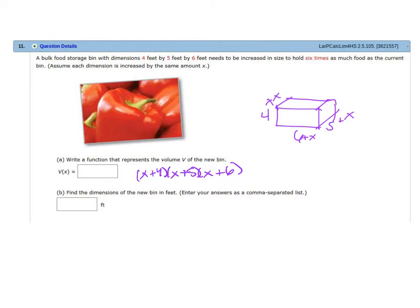So we want it to hold six times more than it's already holding. So to find the current volume of the box, we're going to multiply 4 times 5 times 6. And then what we want to do is we want to increase it six times more. So let's multiply that all together. And so what we want our new volume to be is we want it to be 720 feet cubed.